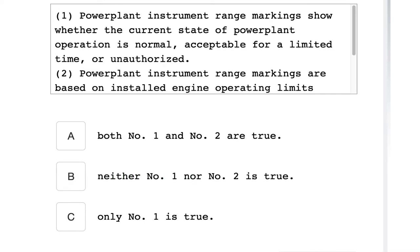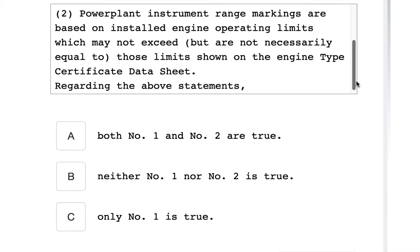Number one: Powerplant instrument range marking shows whether the current state of powerplant operation is normal, acceptable for a limited time, or unauthorized. Number two: Powerplant instrument range markings are based on installed engine operation limits which may not exceed but are not necessarily equal to those limits shown on the engine type certificate data sheet. Regarding the above statements, both number one and number two are true statements.